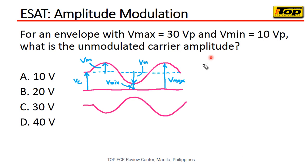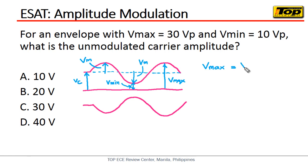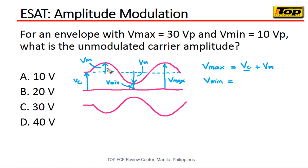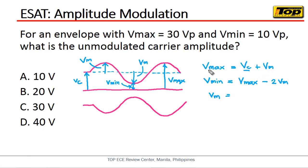How do we get Vmax? Vmax is equal to Vc plus Vm — that is, the carrier voltage plus the modulating voltage. And we are asked to get Vc. For Vmin, that is equal to Vmax minus twice of Vm — because as you can see, there are two Vm values. So Vmax minus 2Vm gives us Vmin. Let's get Vm first. Once we have Vm and the given Vmax, we can then get Vc.